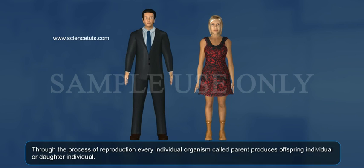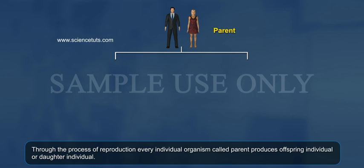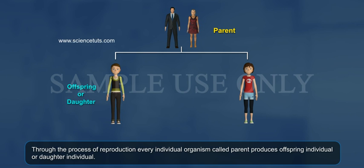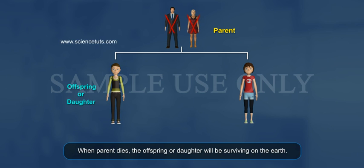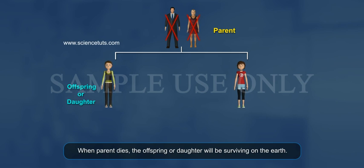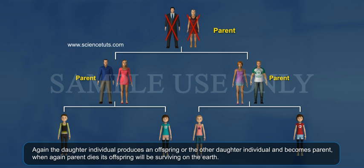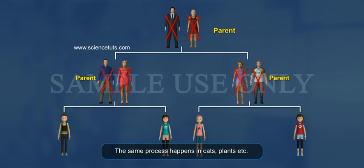Through the process of reproduction, every individual organism called a parent produces offspring — an individual or daughter individual. When the parent dies, the offspring or daughter will be surviving on the earth. Again, the daughter individual produces an offspring or another daughter individual and becomes a parent. When the parent dies, its offspring will be surviving on the earth.